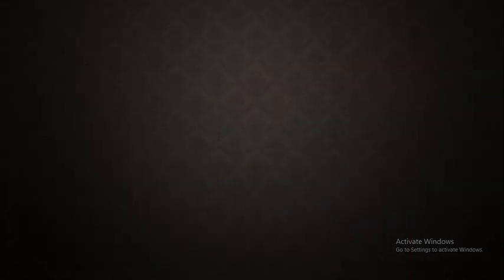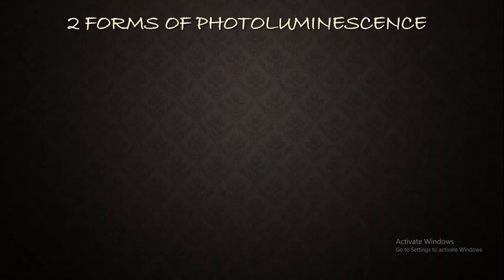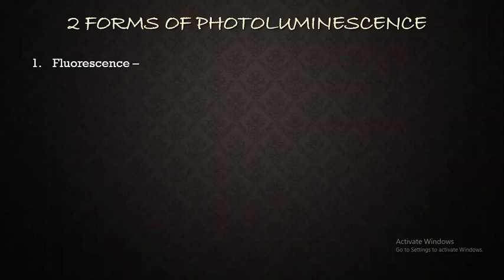Photoluminescence can be divided into two forms. Generally we have two types of luminescence: photoluminescence, triggered by a photon, and chemiluminescence, triggered by chemicals or a chemical reaction. In photoluminescence we have two different forms: one is fluorescence and the other is phosphorescence. The difference between the two is only with respect to the lifetime of the excited electron.